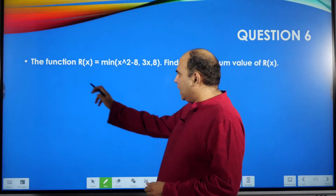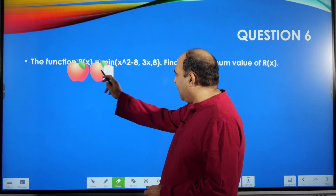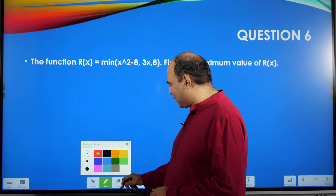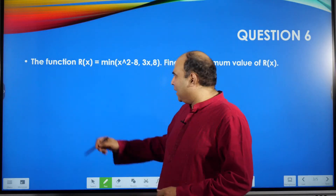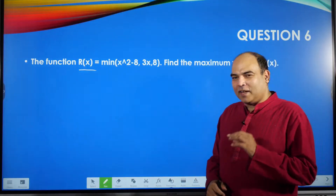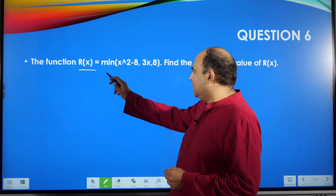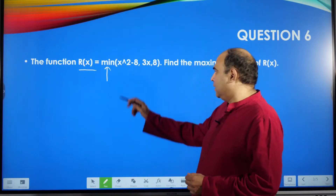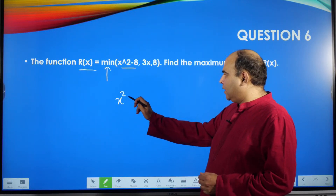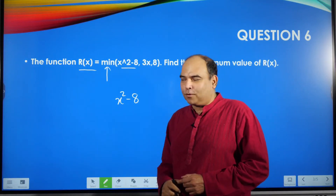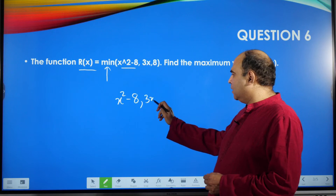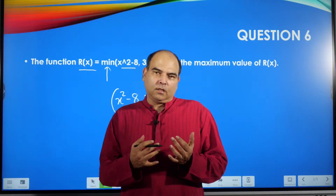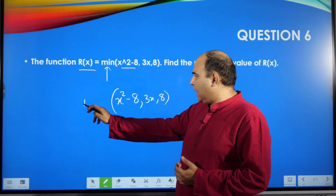So if you look at this question, how do you handle it? You need to understand that R(x) is a function here. The function R(x) takes the minimum of three arguments, and those three arguments are functions themselves: x² minus 6 — that is x² minus 8 — then 3x, and then 8. R(x) looks at these three functions and selects the minimum of these three.